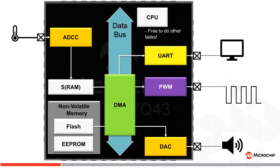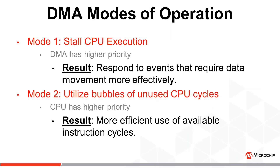The DMA peripheral has two primary modes of operation. Firstly, it can stall CPU execution until a data transfer is complete, or it can utilize bubbles of unused instruction cycles that occur when the CPU is idle or waiting for an event. At this point you're probably wondering — if the DMA and the CPU seem to share instruction cycles, how does this really improve performance?